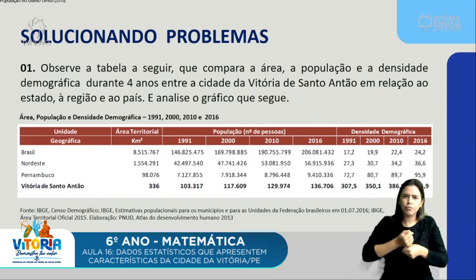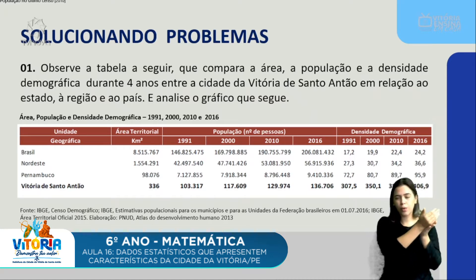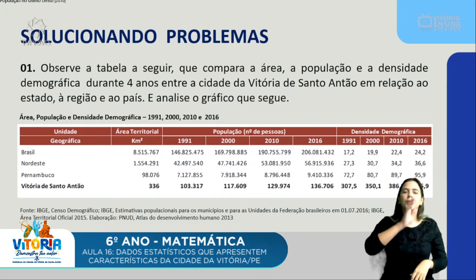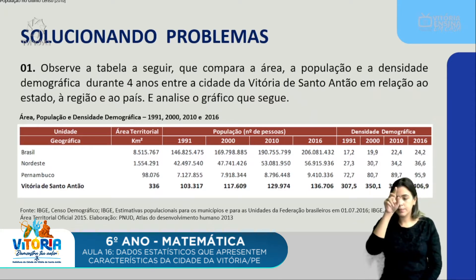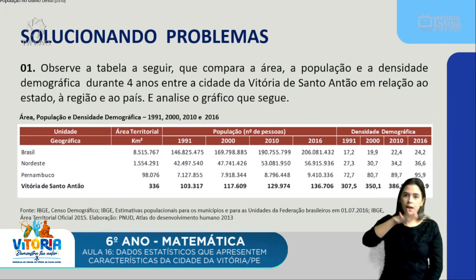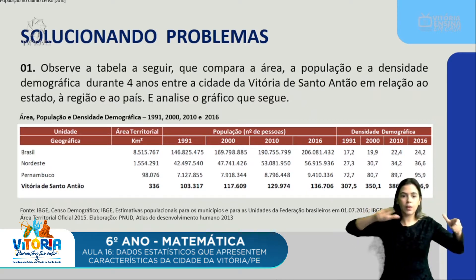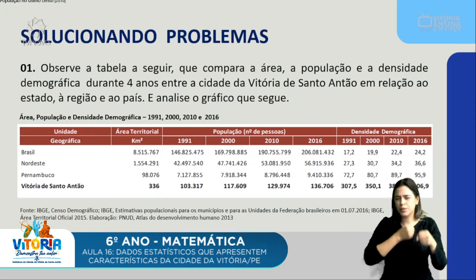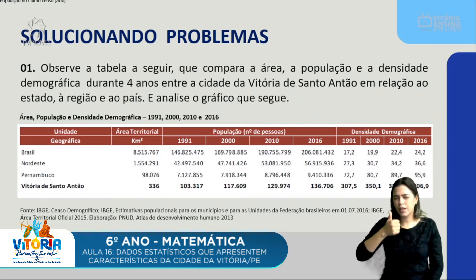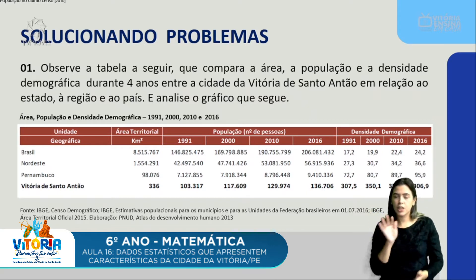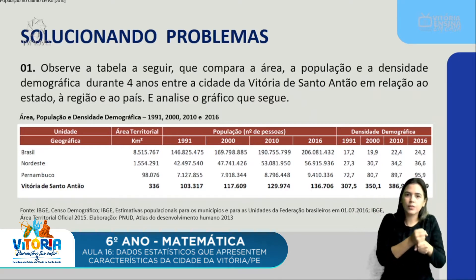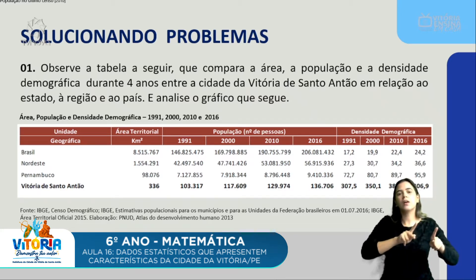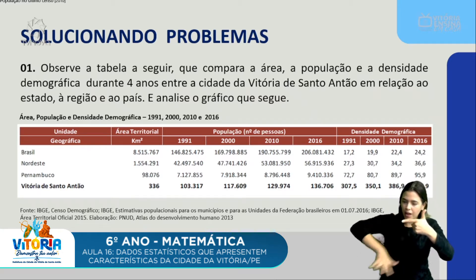Olhando a tabela, nós vimos lá no início dela a unidade geográfica — Brasil, Nordeste, Pernambuco, Vitória — depois a área territorial, o tamanho de cada espaço. Os valores da população ao longo dos anos estão em 1991, 2000, 2010 até 2016, e por fim a densidade demográfica, que é a razão entre a população pela área — o quanto de pessoas residem a cada quilômetro quadrado.